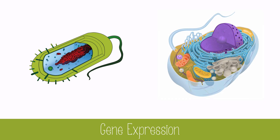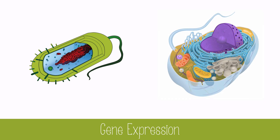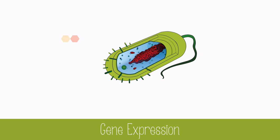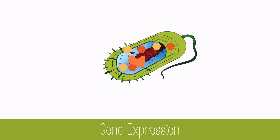Prokaryotes and eukaryotes have different ways of regulating their gene expression. Prokaryotes rely on variations in their environment to regulate their gene expression. For example, if lactose is present in the environment, it will trigger the expression of lactase so the bacteria can break down lactose. If lactose is absent, the gene is not expressed.